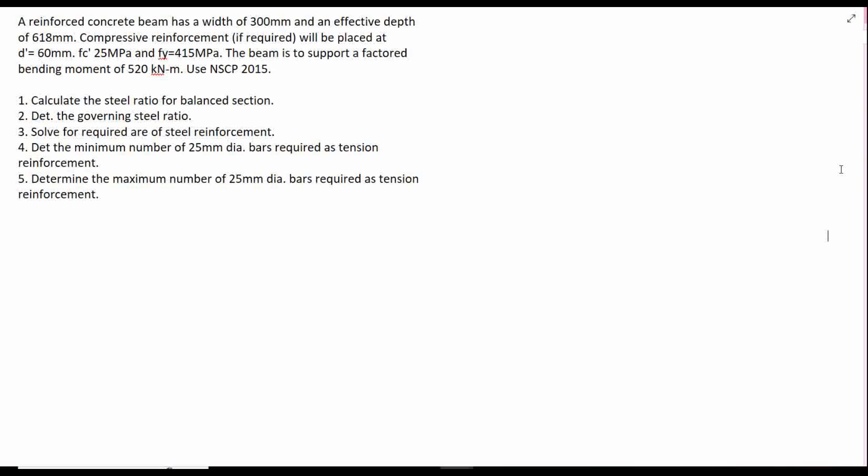Calculate the steel ratio for balanced section, determine the governing steel ratio, solve for the required area of steel reinforcement. Number 4 is determine the minimum number of 25mm diameter bars required as tension reinforcement, and determine the maximum number of 25mm diameter bars required as tension reinforcement.